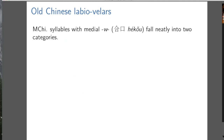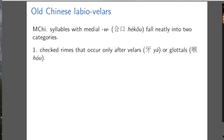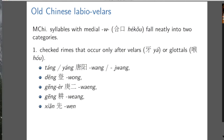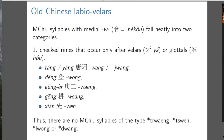Now onto labiovelars. If we look at the distribution of medial W in Middle Chinese, it falls neatly into two categories. The first is checked rhymes that occur only after velars or glottals. And there are no Middle Chinese syllables of the types you see on the screen — which makes the same point basically that acute initials don't occur with these rhymes.